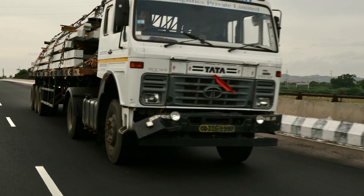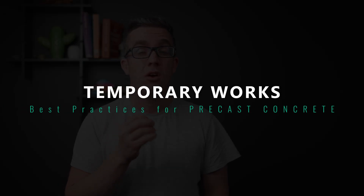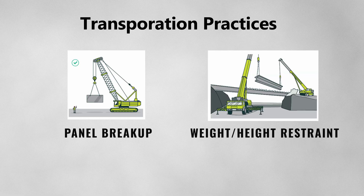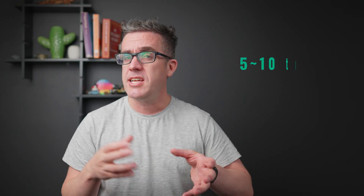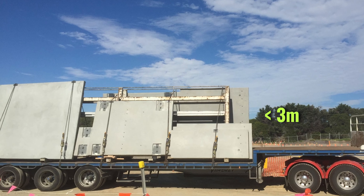Arguably one of the most unique features about precast design is the fact that you need to transport it from the factory and bring it to the place it needs to be installed. This leads to a couple of things to consider early on in your design — like what is the panel breaker and how much can they lift off that truck? In reality, it's somewhere between 5 to 10 tonnes for that lifting range. Another aspect to limiting weight is also the height, as anything more than about 3 metres is going to be problematic for site transport unless you have a unique transport solution.